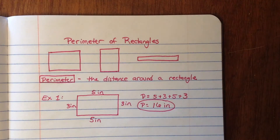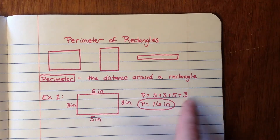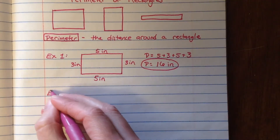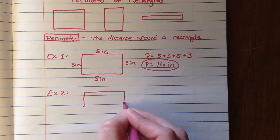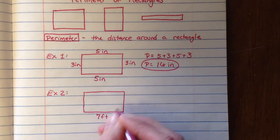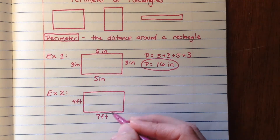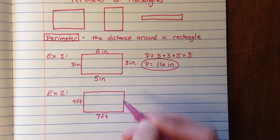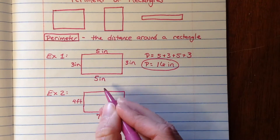That's really all there is to perimeter — just finding the outside edge. You might be thinking you could do this a little bit quicker instead of adding up four different numbers, so let's look at a formula we can use. For example number two, we're given a rectangle where this measurement is seven feet and this measurement is four feet. We can recognize that since this side is seven, this side is also seven — that's two times seven, which gives me 14.